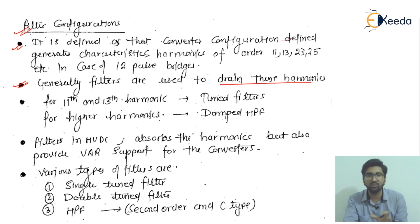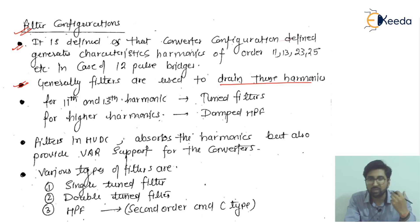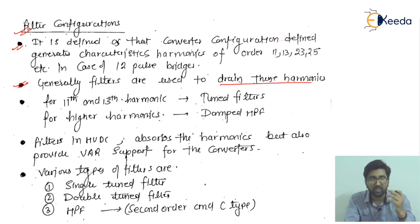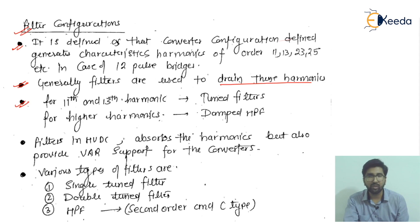Filters are designed in such a way that they can drain or filter out the characteristic harmonics from the system, or suppress them. For the 11th and 13th harmonics we generally use tuned filters. For higher order harmonics, we use damped high-pass filters.